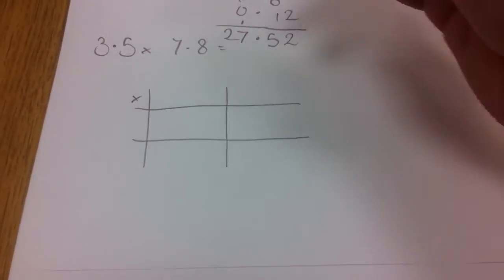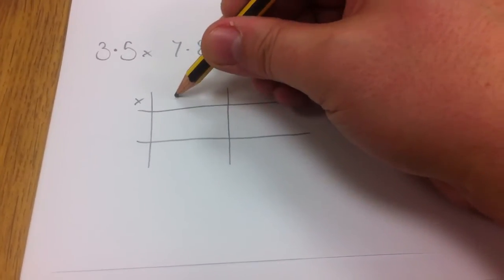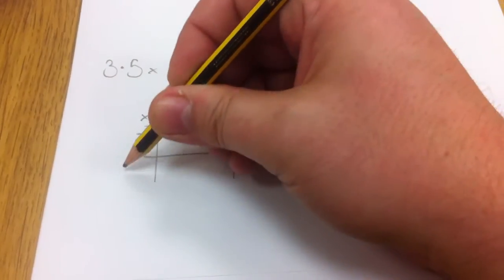Have another go. So we've got 3.5 times 7.8. So partition first. 3, 0.5, 7, 0.8.